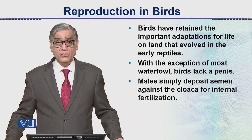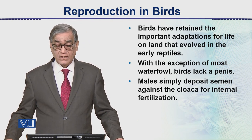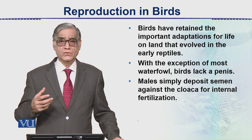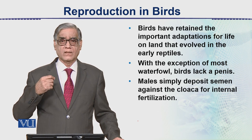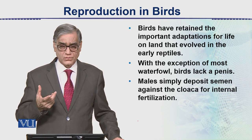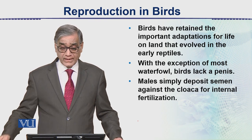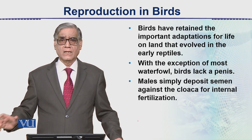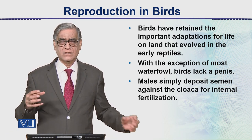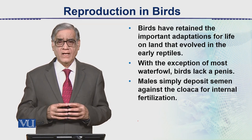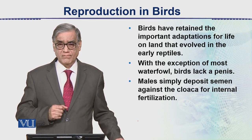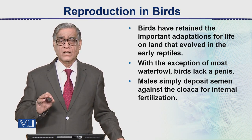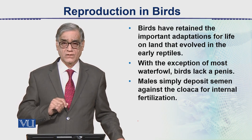With the exception of most waterfowl, birds lack a penis — the intermittent organ used to introduce sperm into the female. Males simply deposit semen against the cloaca for internal fertilization. They meet their cloaca to introduce sperm into the female. Certain animals, however, do possess a penis for this purpose.